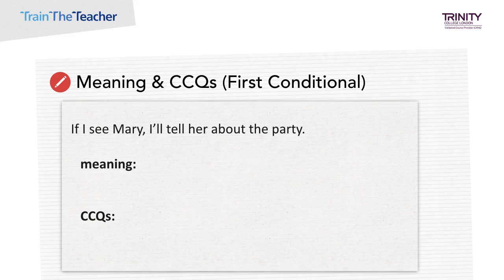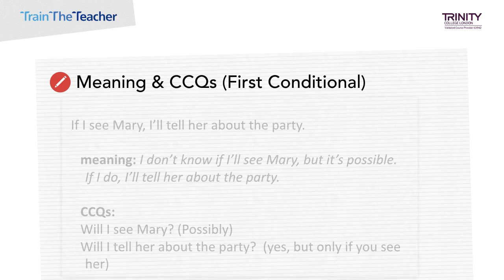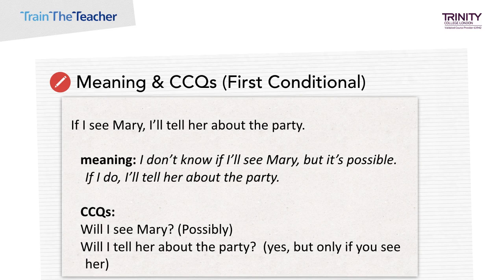Here's another one: If I see Mary, I'll tell her about the party. Discuss the meaning and possible CCQs for this sentence with your peers or group. Pause the video and do this now. The meaning behind this statement is: I don't know if I'll see Mary but it's possible. If I do, I'll tell her about the party. Possible CCQs: Will I see Mary? Possibly. Will I tell her about the party? Yes, but only if you see her.